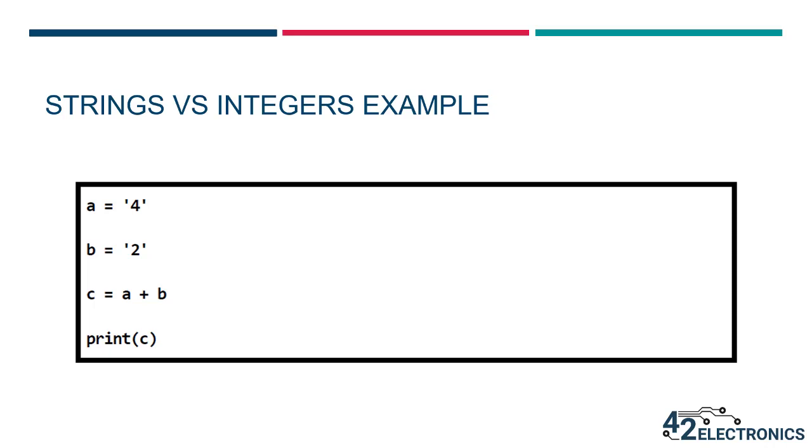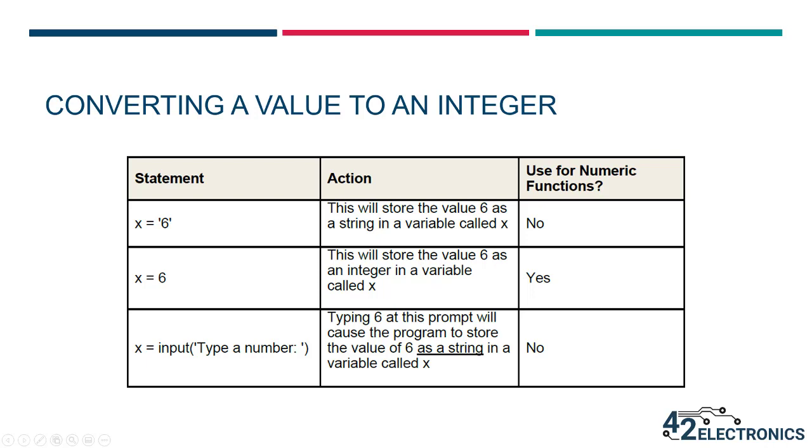Python doesn't understand that these characters represent numeric values because with the quotation marks, Python views them as strings or texts. To use a character for math, Python must understand that the character is a numeric value known as an integer.